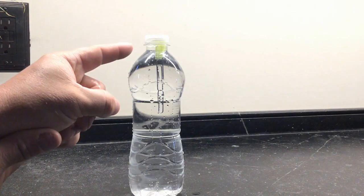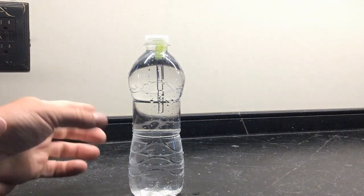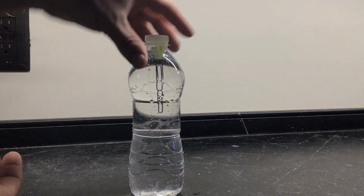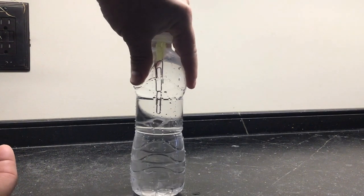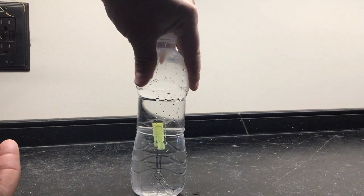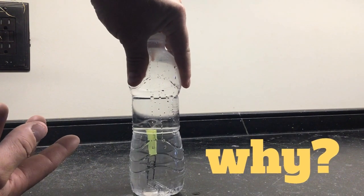Now you can see that our straw paper clip diver is floating at the top of the bottle. Now all I need to do is give this bottle a little squeeze and let's watch what happens. Squeeze the top and my straw diver goes to the bottom. The question is why is that happening?